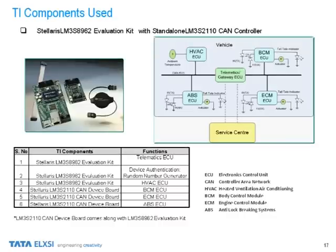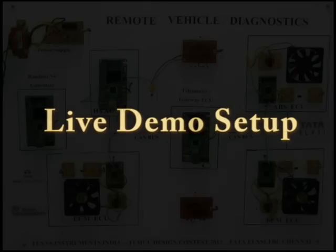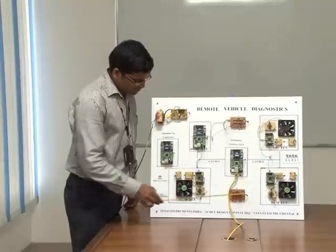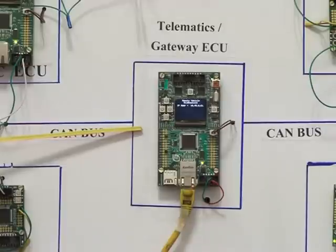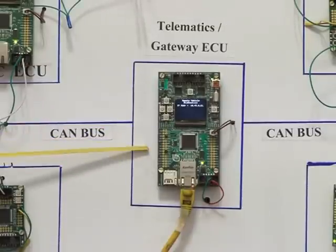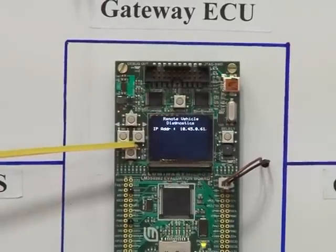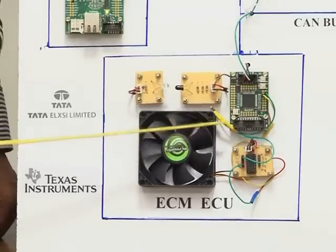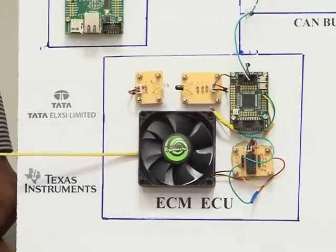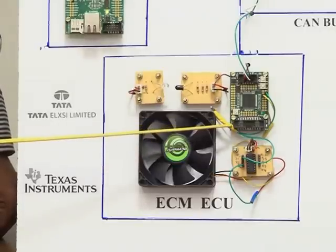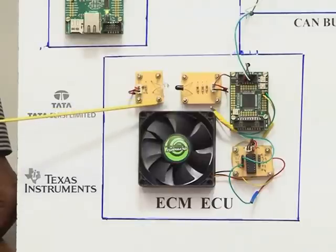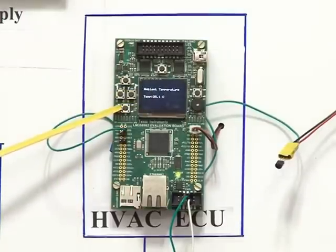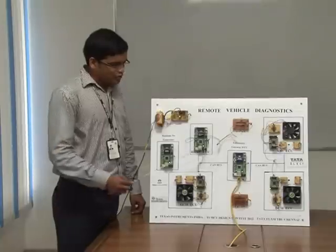The TI components used for our Remote Vehicle Diagnostics prototype are as shown. There are five ECUs connected through CAN bus: HVAC, Telematics, ABS, BCM, and ECM ECU. The Telematic ECU provides internet network connectivity — we used an office LAN network for our demonstration. The IP address allocated for this vehicle is displayed here. Other than HVAC ECU, all ECUs are connected with a radiator fan, LED indicator, and IR transmitter and receiver. The radiator fan demonstrates actuator functionality, the LED demonstrates telltale indicator functionality, and the IR transmitter and receiver demonstrates message blocking failure. An ambient sensor is connected to the HVAC ECU to measure ambient temperature, and the measured temperature is displayed here. This whole setup resembles a vehicle.